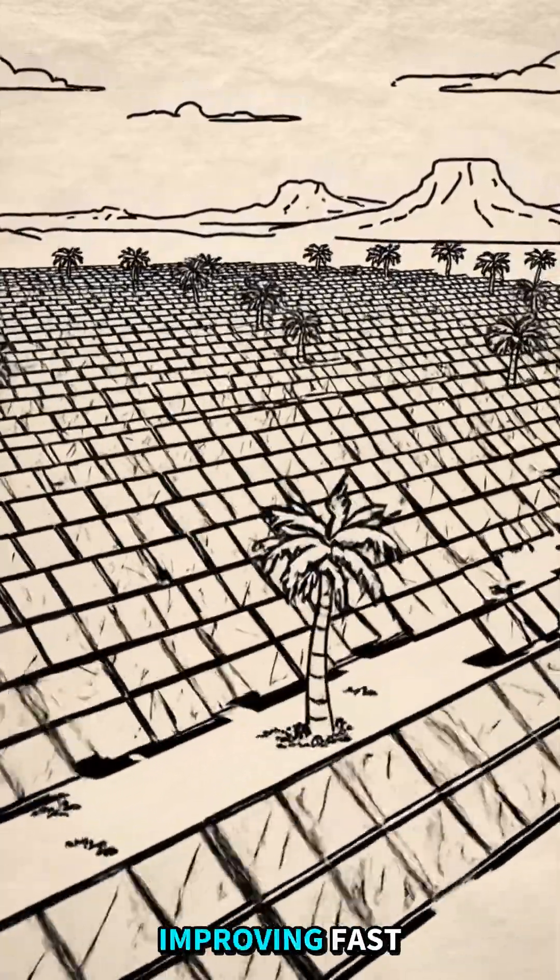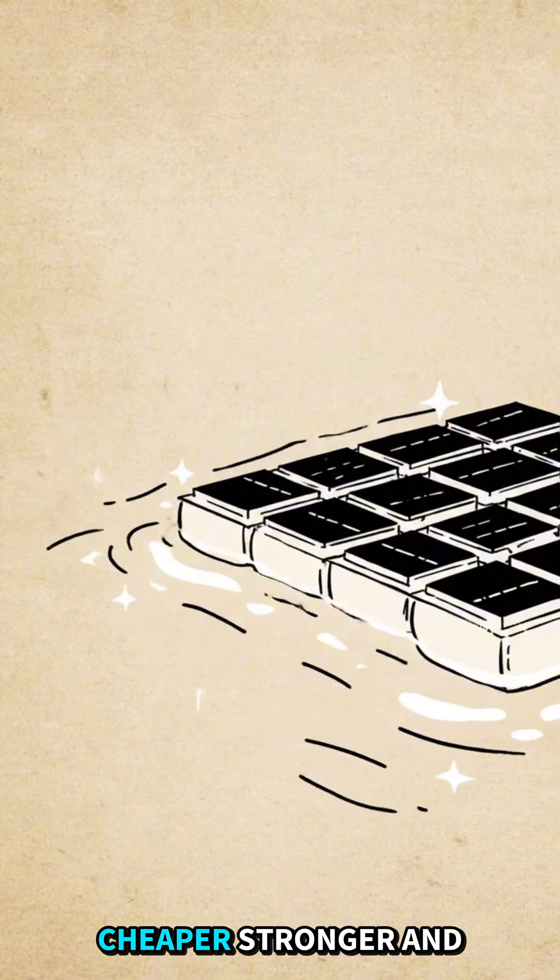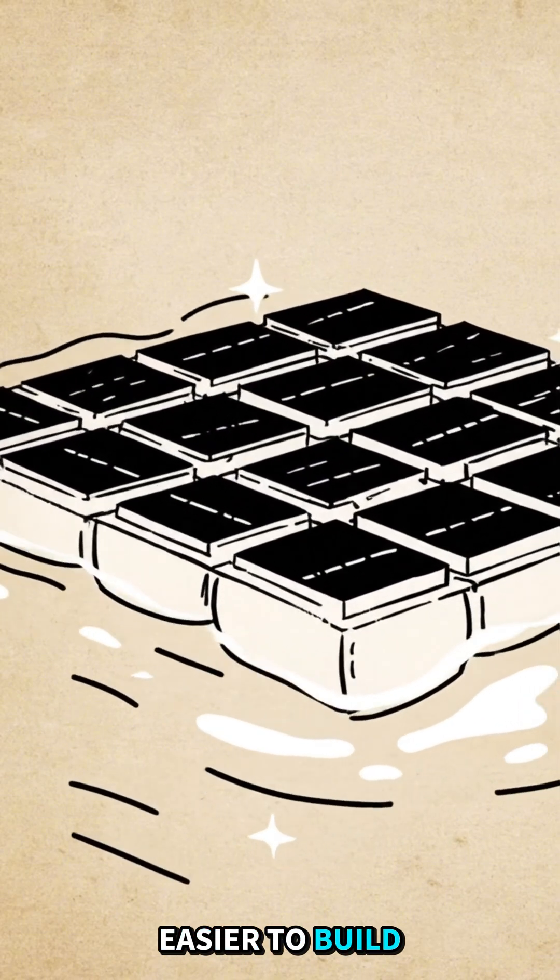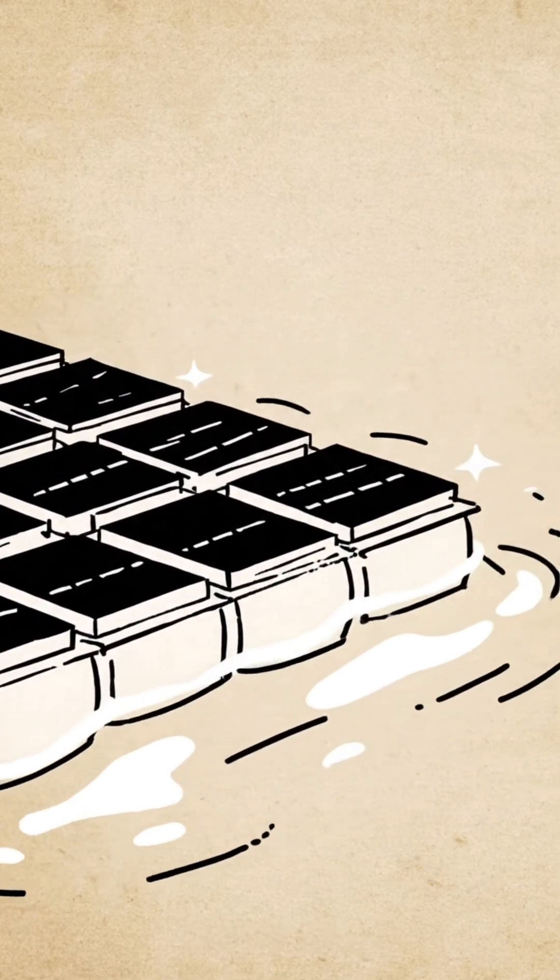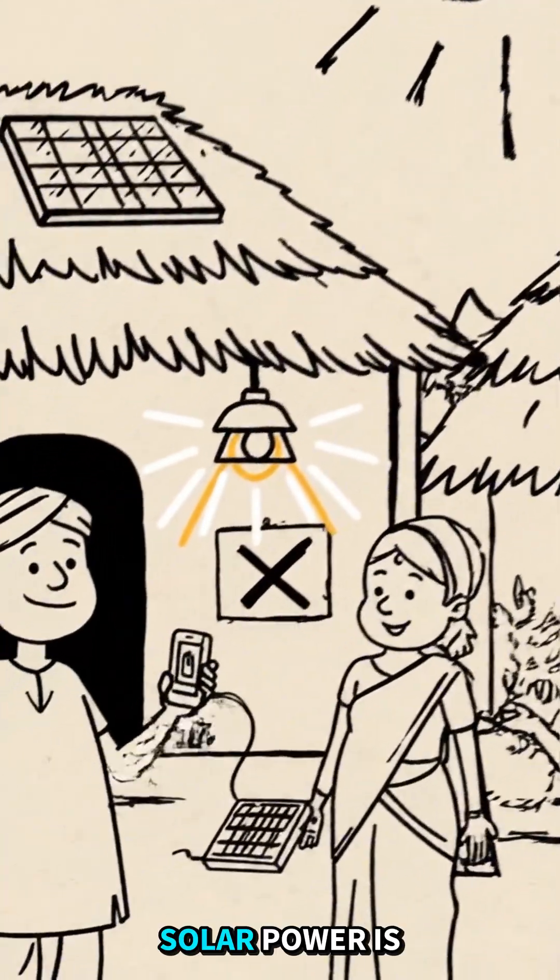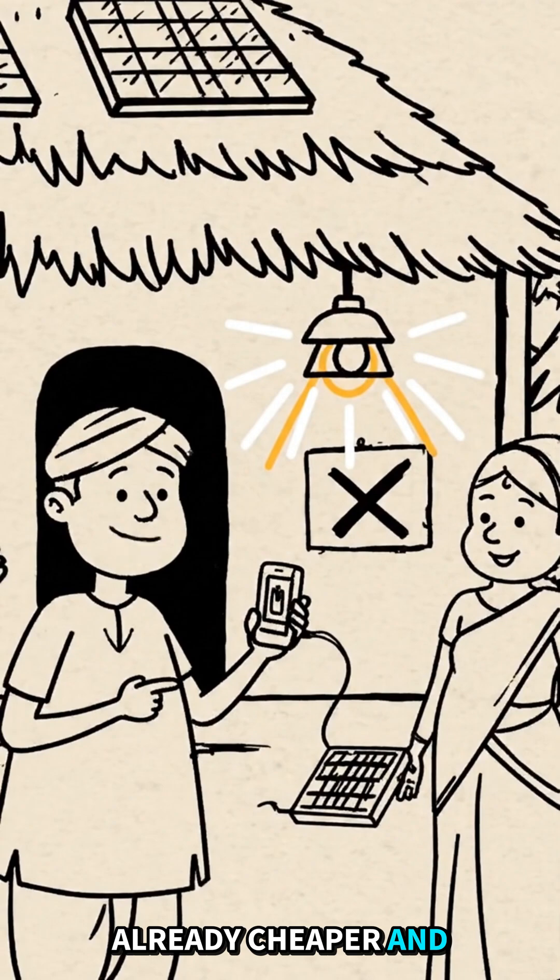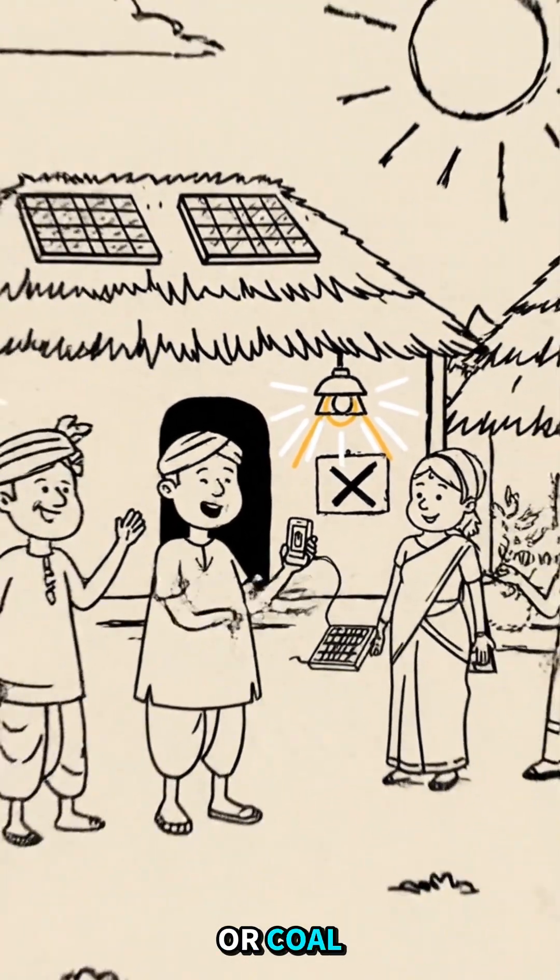And things are improving fast. Solar panels are cheaper, stronger, and easier to build every year. Some even float on lakes or oceans. In many sunny countries, solar power is already cheaper and safer than kerosene or coal.